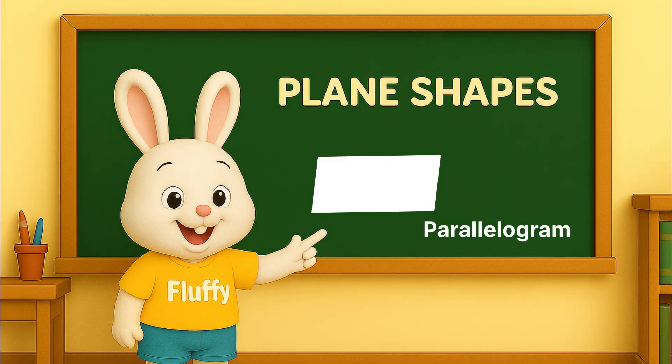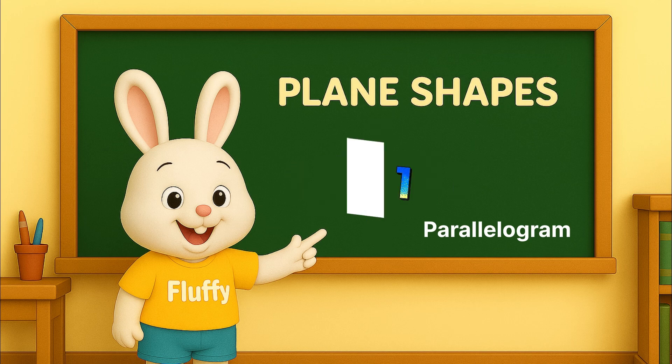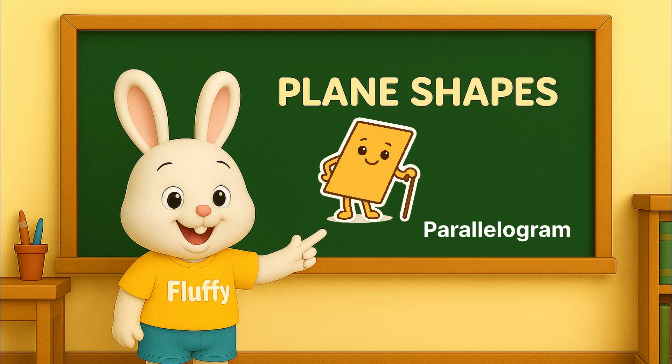Parallelogram. A parallelogram has four sides. The sides are slanted, but opposite ones are the same, like a leaning rectangle.